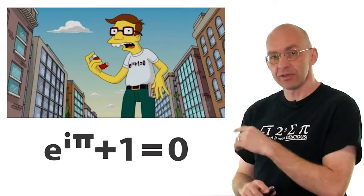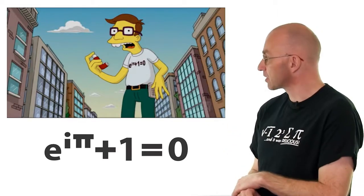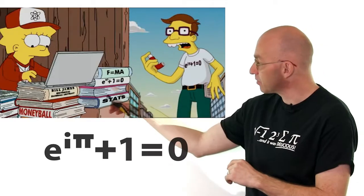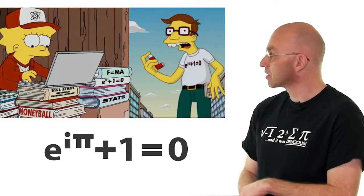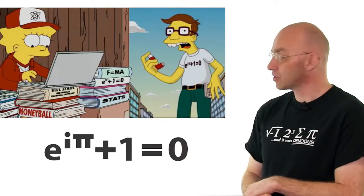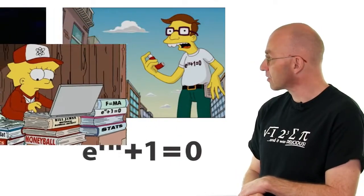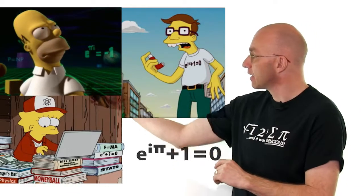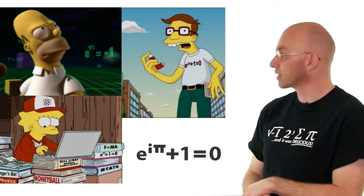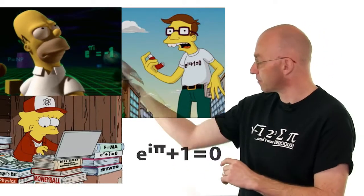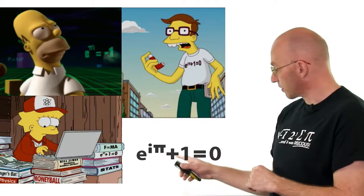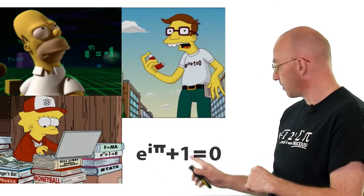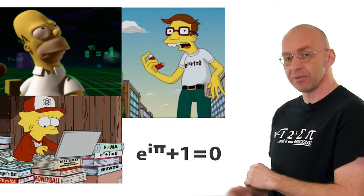Before we do this, the other two instances of this equation. The first one is here on a maths book that Lisa is using. And the second one occurs in an episode where Homer stumbles into the third dimension. It's just a different form where you take minus one on each side, so e to the i pi is equal to minus one.